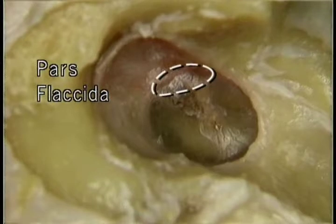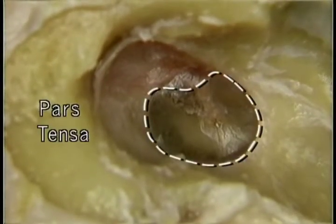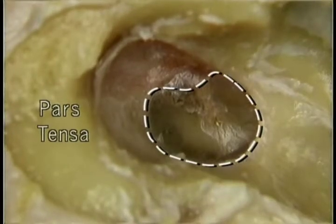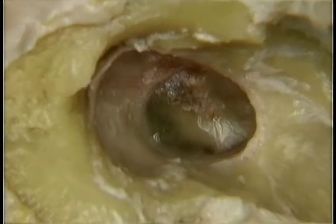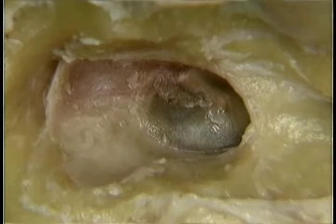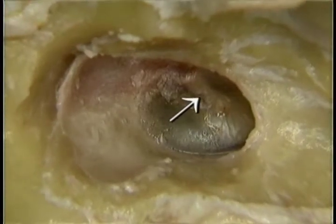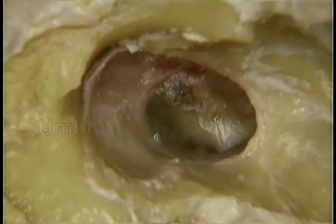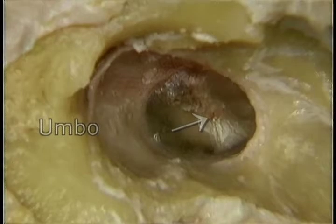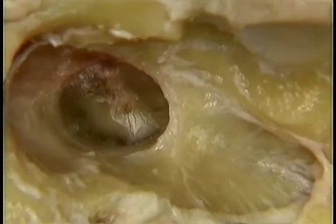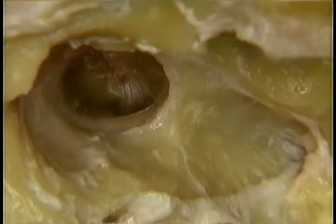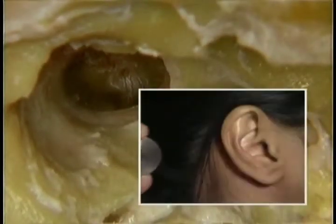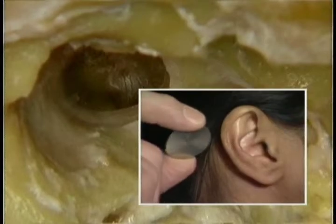The tympanic membrane is so thin that it's partly transparent. This small upper part of the tympanic membrane, the pars flaccida, is slack. This much larger part below, the pars tensa, is tense. The tense part of the tympanic membrane has the shape of a shallow cone, drawn inwards by its attachment to the handle of the malleus. The apex of the cone, where the tip of the malleus is attached, is called the umbo. The tympanic membrane faces downwards and forwards, and when seen from the side, it's tilted in this plane.